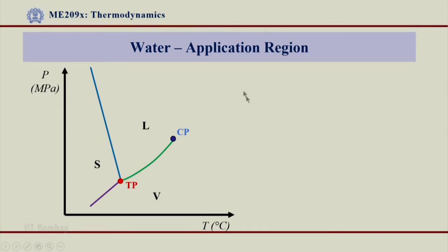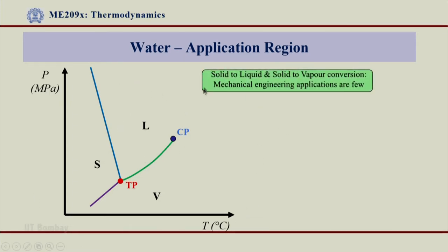This is my PT diagram. We have got different regions over here and we got solid to liquid and solid to vapor conversion, phase conversion that happens across S to L region or S-V region. Now, there are very few mechanical engineering applications in these regions where we normally come across.